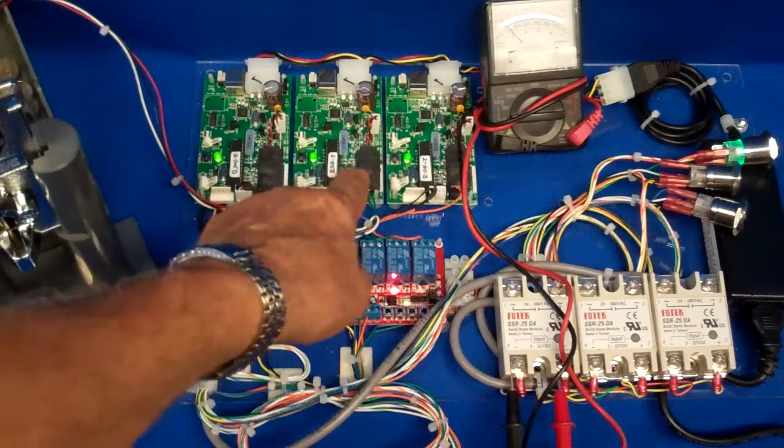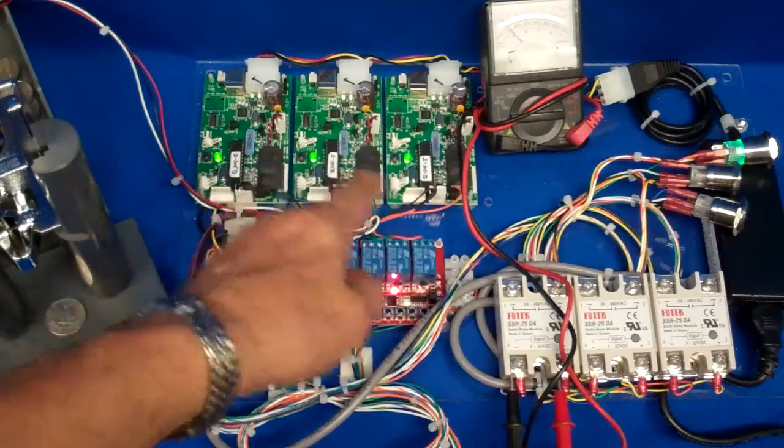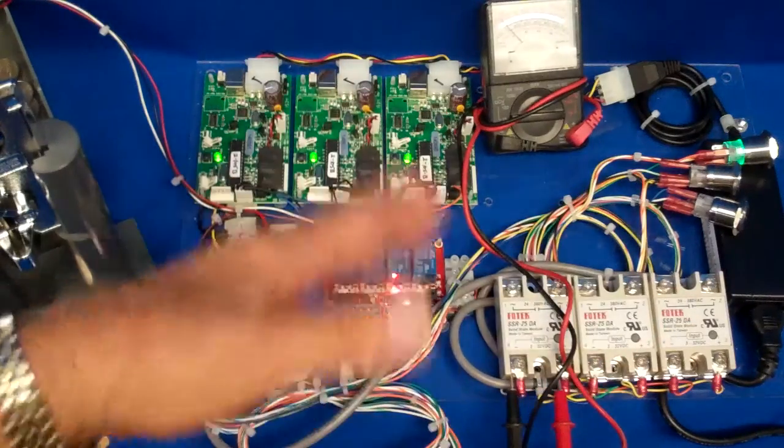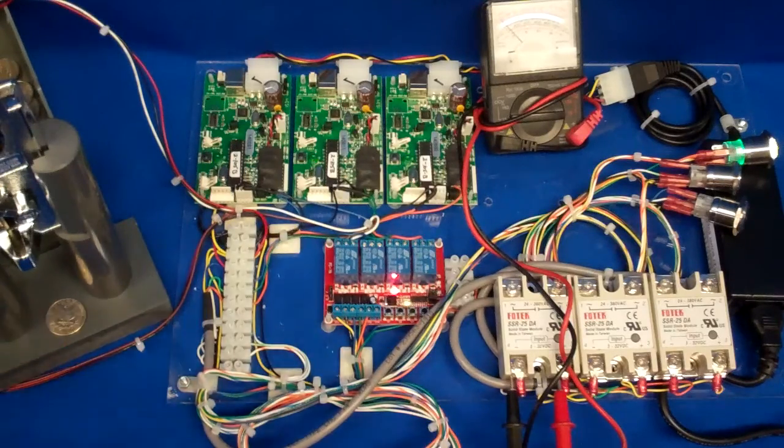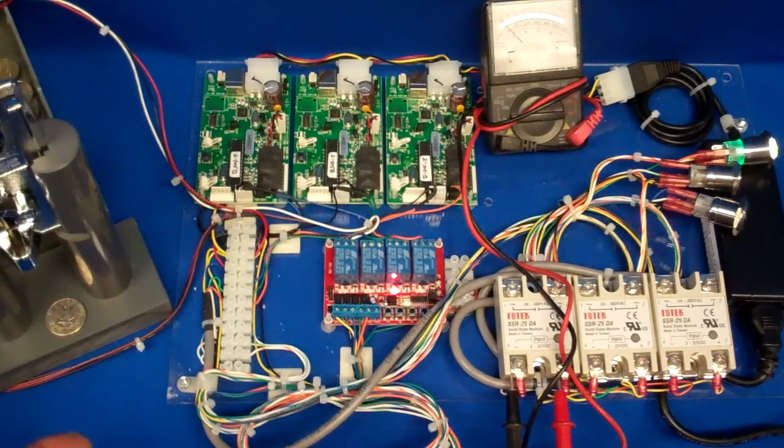It's opto-isolated for the outputs going to your relays, so there's no chance of any feedback. This all operates on 12 volts DC, which is ideal for solar applications.